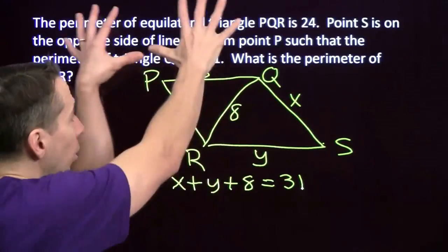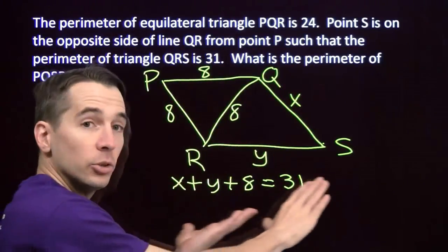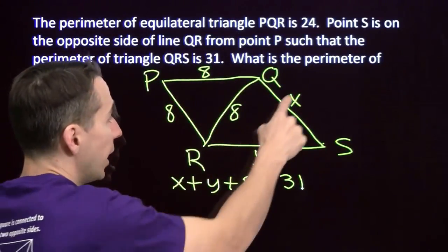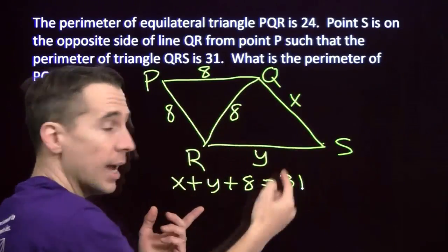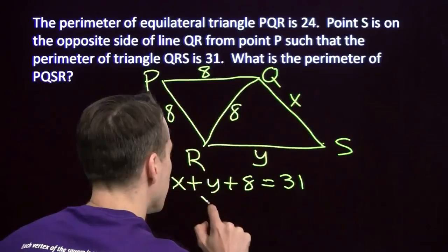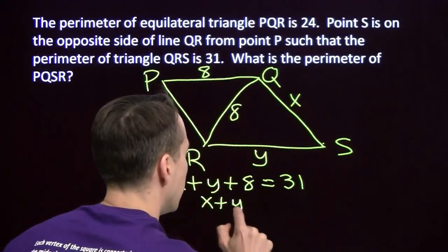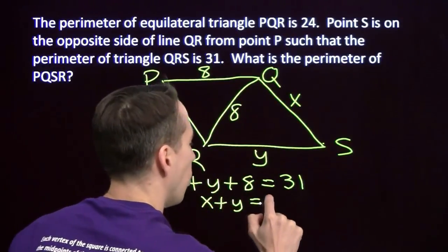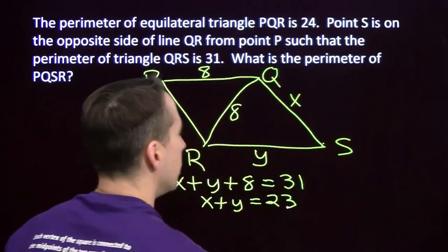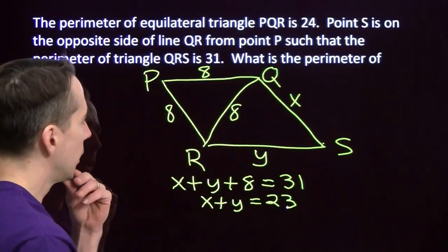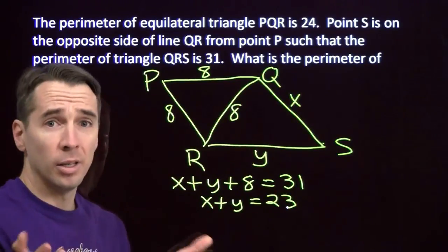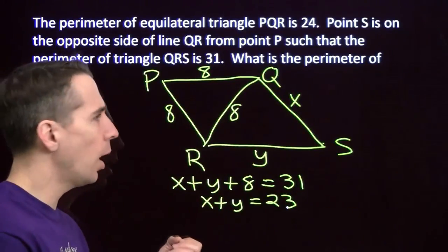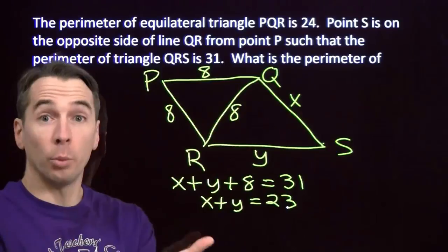So again, all I'm doing is turning all these words into a diagram, into equations we can handle. I know that X plus Y plus 8 is 31 because the perimeter of QRS is 31. I can subtract 8 from both sides, and I get X plus Y is 23. Now what? Well, I can't find X and Y.